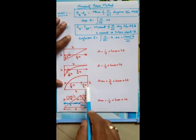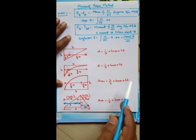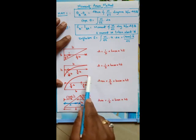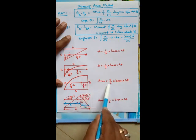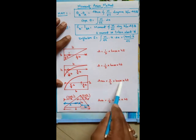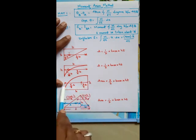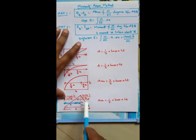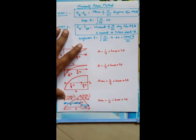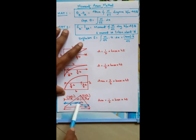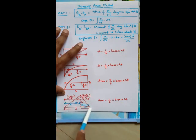For a simply supported beam subjected to UDL, considering the full span, the bending moment diagram is a parabola. Its area is (2/3) × base × height, and the CG is at three-eighths of the base from the maximum and five-eighths from the minimum. For a simply supported beam with a point load at distances A and B from the supports, the diagram is a triangle with CG at (L + A)/3 from one end and (L + B)/3 from the other.